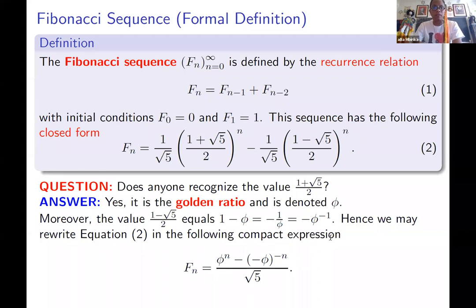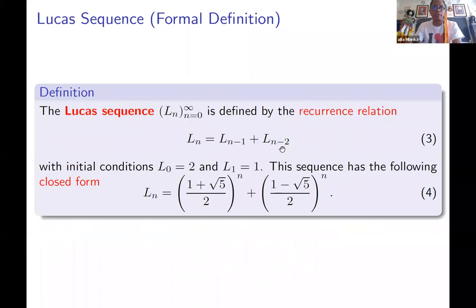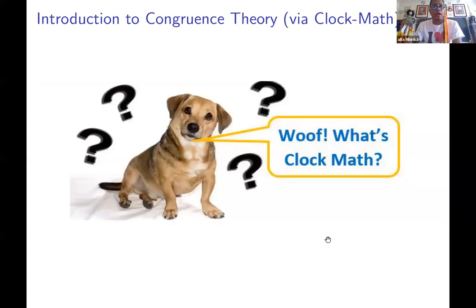So what about the Lucas sequence? The Lucas sequence is defined by the following recurrence — the same as Fibonacci, but with L's. It also has a non-trivial closed form, but it's slightly easier. It's the golden ratio and the golden ratio's buddy.